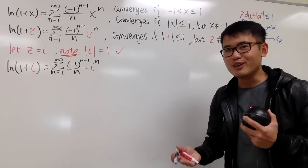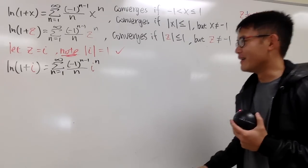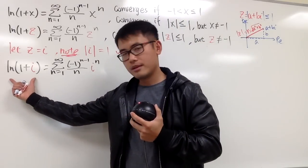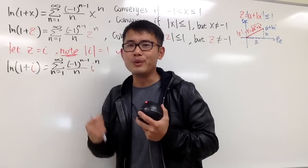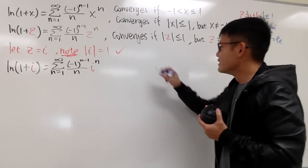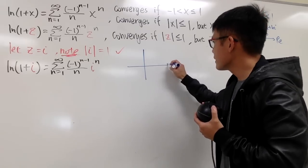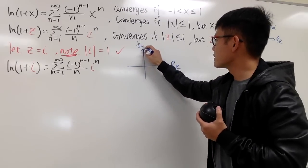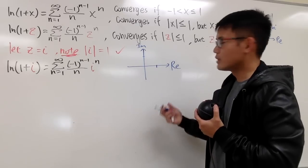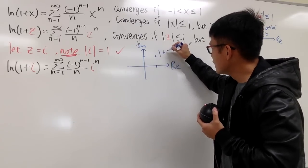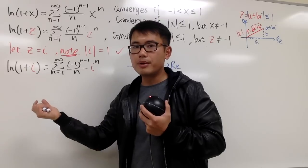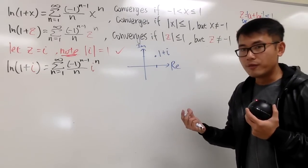Now how do we calculate ln of 1 plus i? We need to change this into polar form. First, find the distance from the origin to the point 1 plus i on the complex plane: that's the square root of 1 squared plus 1 squared, which is the square root of 2. And the angle from the positive real axis is pi over 4, since both the real and imaginary parts are 1.